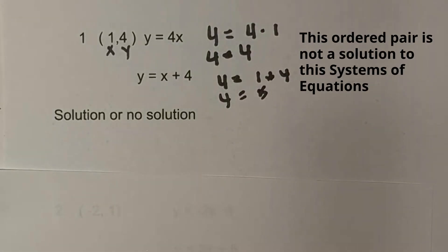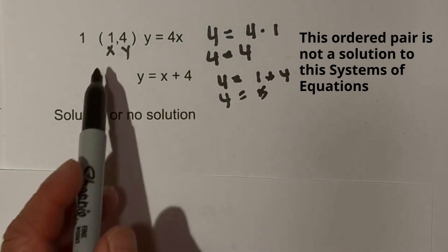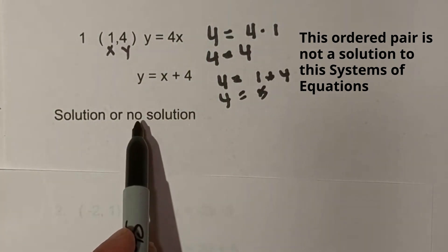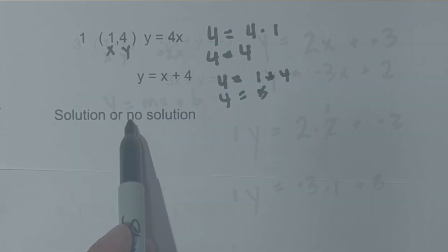So it is not the correct solution. The ordered pair (1, 4) is not a solution, is no solution.